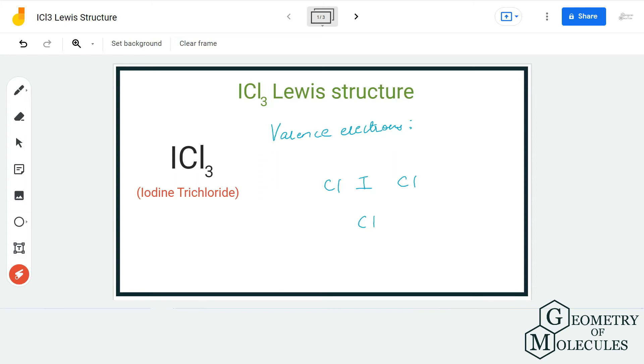Hi guys, welcome back to our channel. In today's video, we are going to help you determine the Lewis structure for ICl₃ molecule. It's the chemical formula for iodine trichloride. To find out its Lewis structure, we will first look at the total number of valence electrons.